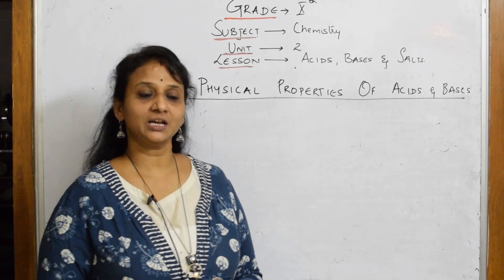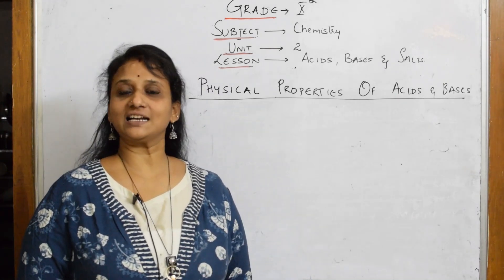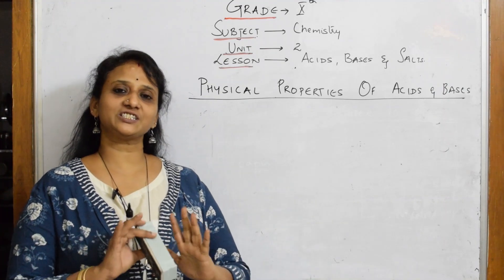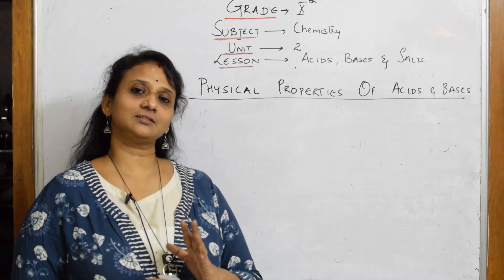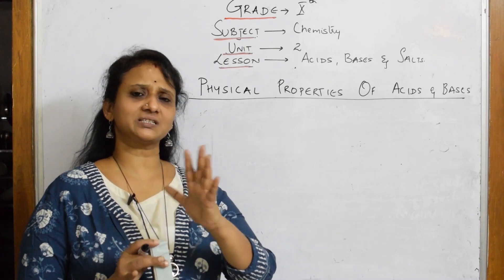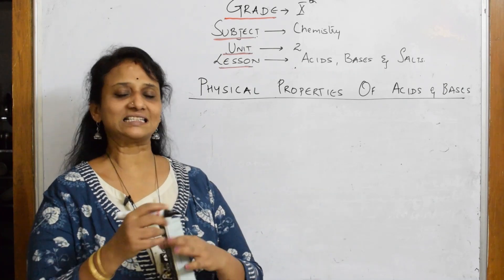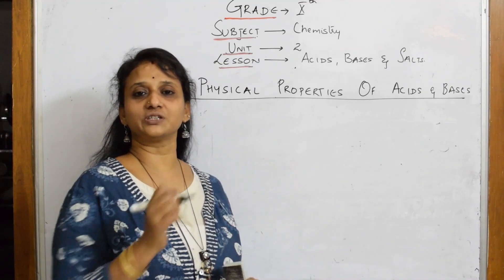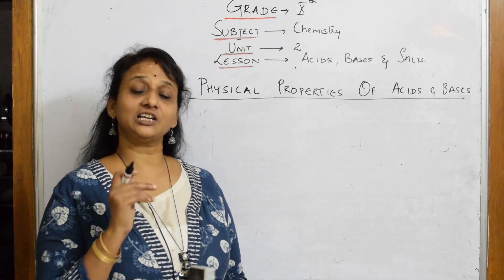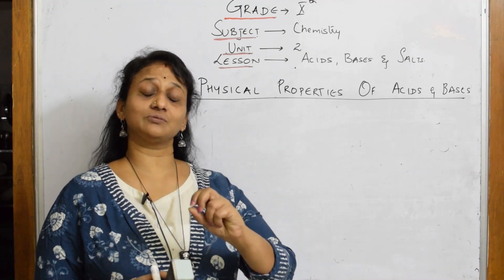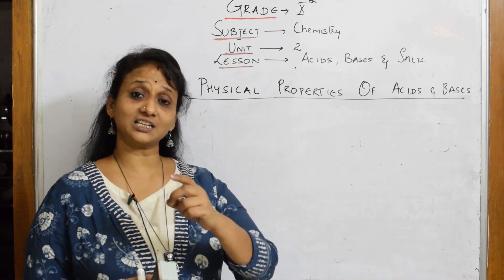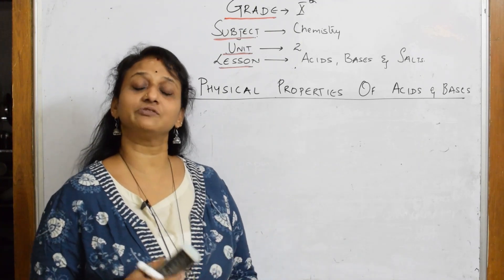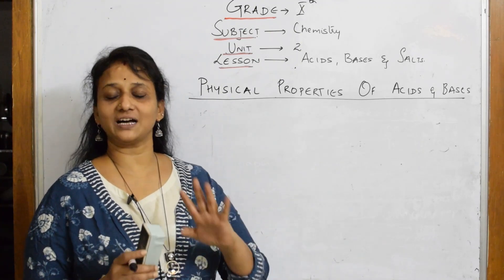Before understanding the textbook definitions, let us first generally see what acids and bases actually are. If you look at your house environment — inside your house, very near to you — I'll challenge you, you'll have five to six or more chemicals which you are using. The first acid we have is in our stomach — that is HCl.